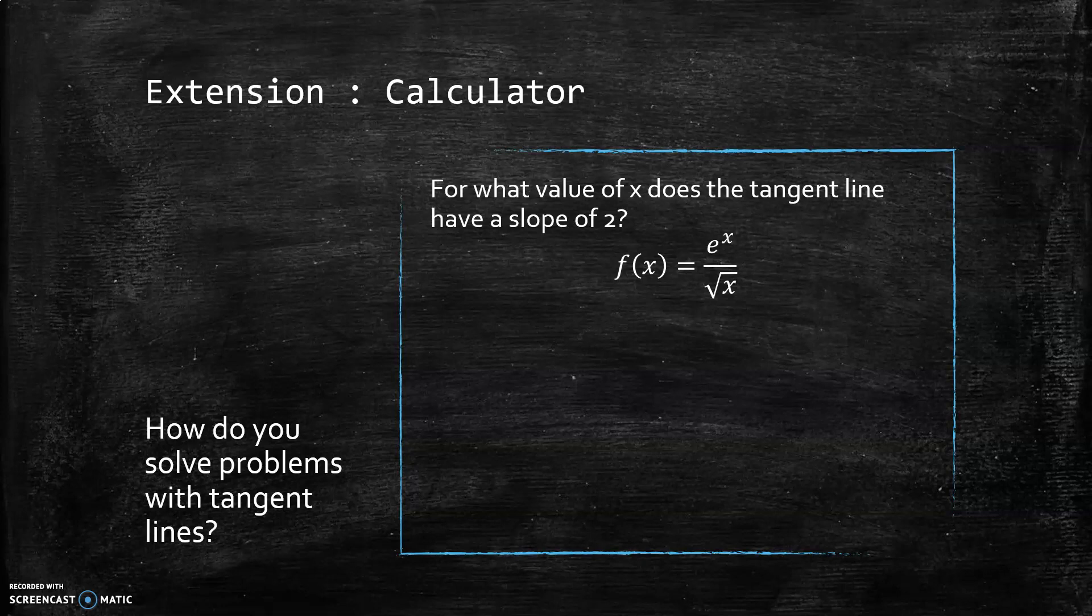This is an extension problem because it involves a calculator. I just want to make sure you're comfortable with calculator problems. For what value of x does the tangent line have a slope of 2?